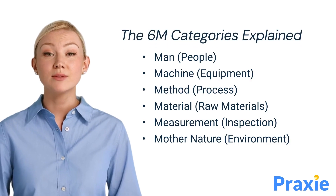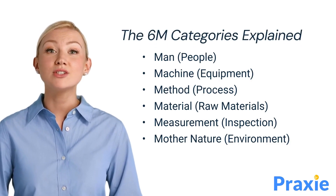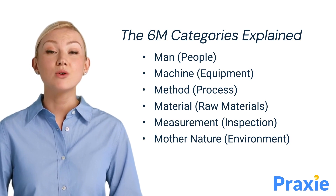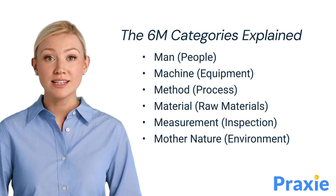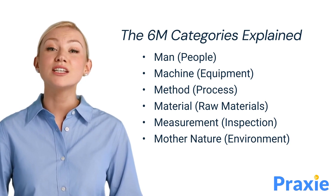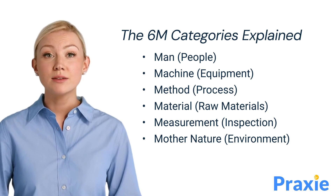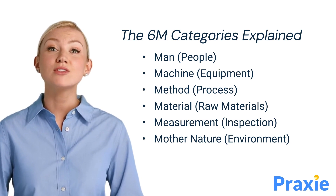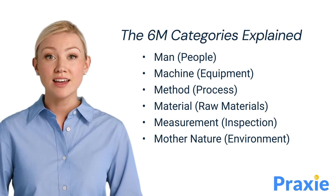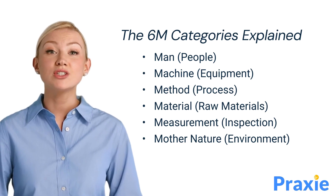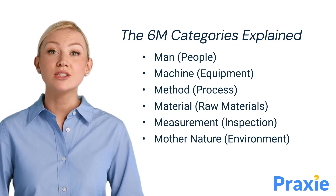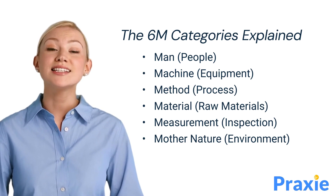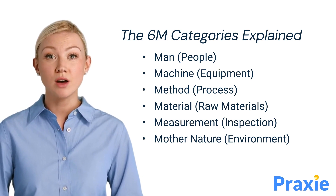Let's break down the 6Ms. Man refers to human factors such as training or skills. Machine includes equipment and technology used in the process. Method covers the procedures or standards followed. Material refers to the raw materials or inputs. Measurement involves inspection or quality checks. And mother nature represents environmental factors like temperature or humidity. Analyzing these categories helps in systematically identifying potential problem areas.